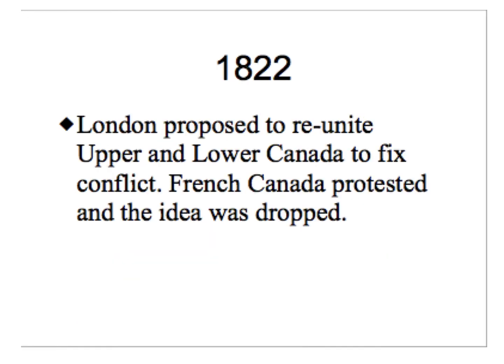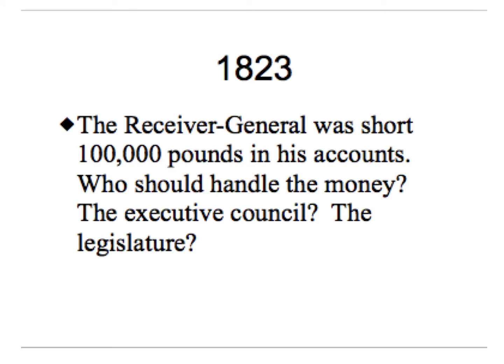In 1822, London proposed to reunite Upper and Lower Canada to fix the French problem, but with a significant amount of protest from the French-dominated Assembly, the idea was dropped — this was before Lord Durham made his suggestion for the Act of Union. In 1823, the Receiver General was short £100,000 in his account, which generally implied the money was misplaced or mishandled.